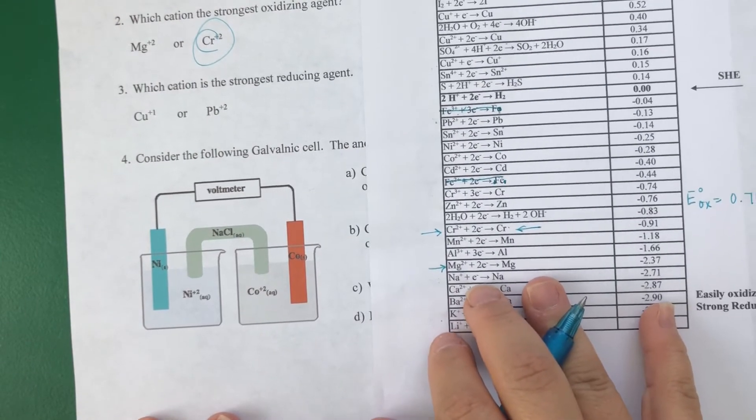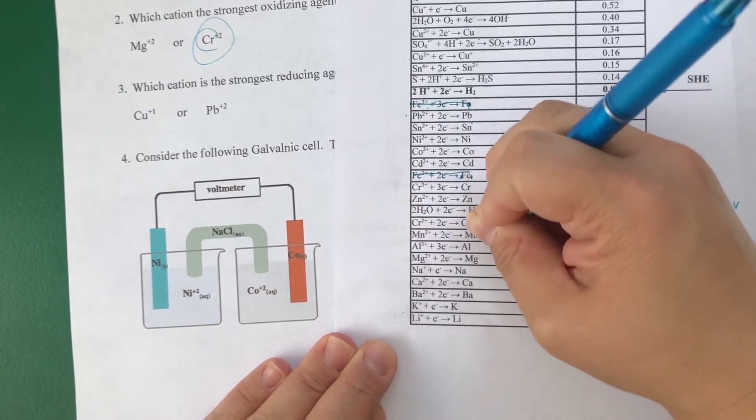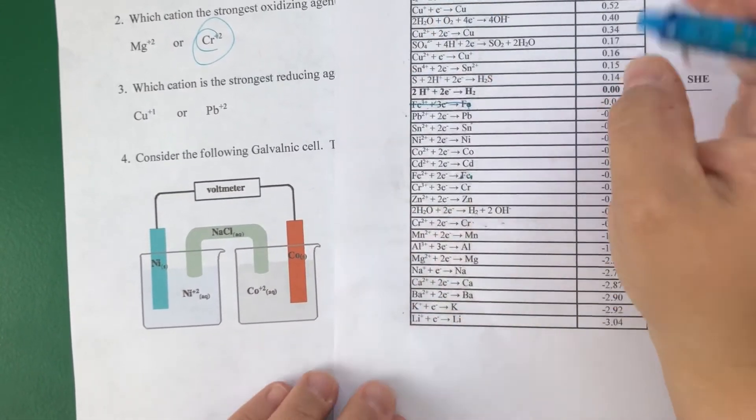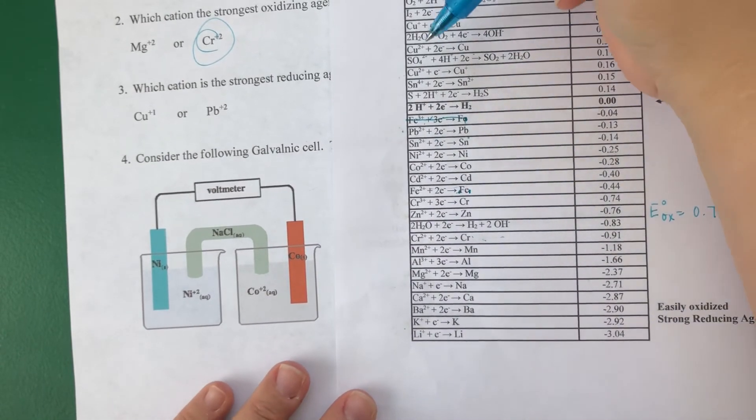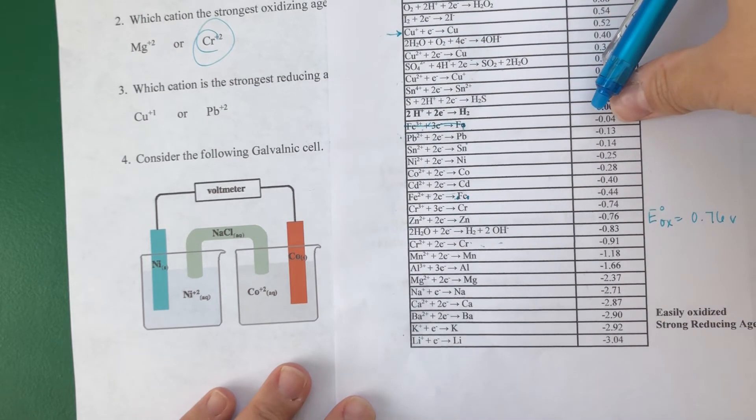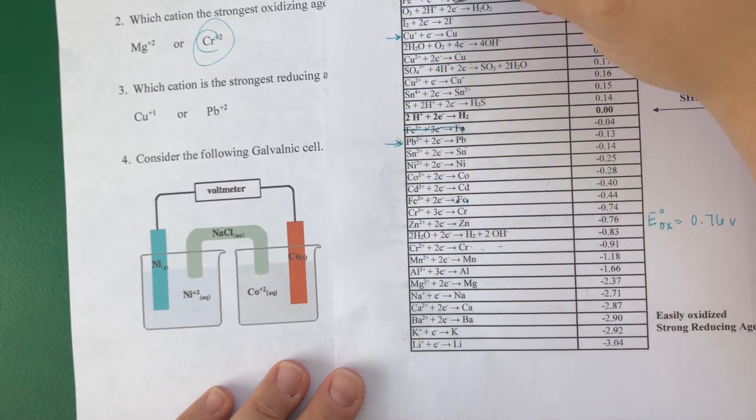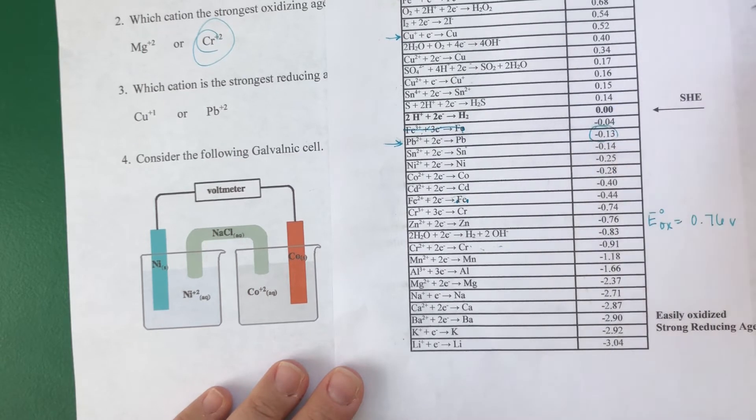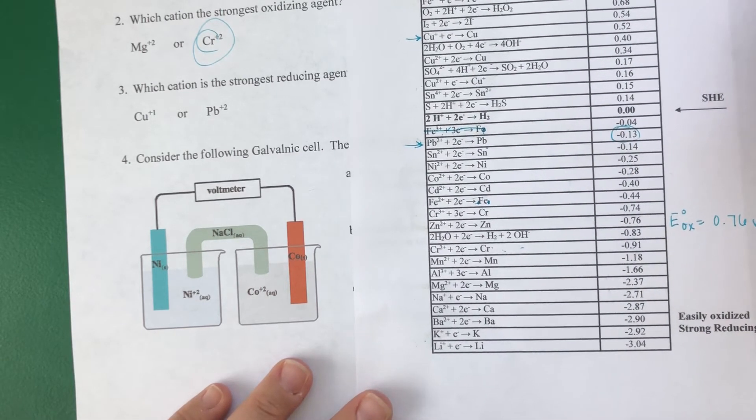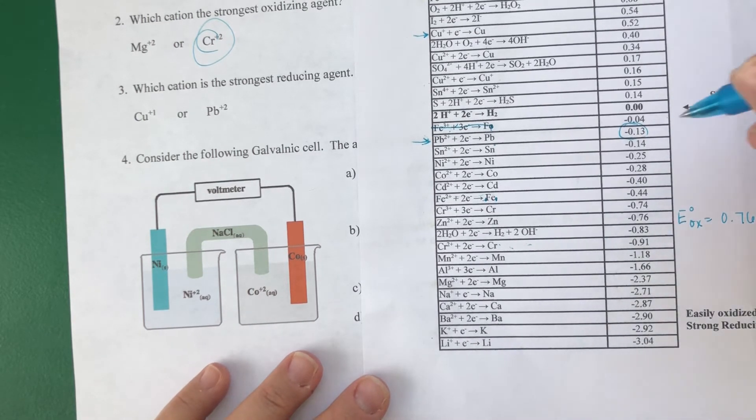Which cation is the strongest reducing agent? Between copper 1+, here's Cu²⁺, this is Cu⁺ and Pb²⁺ ion between these two, whoever's got the smallest reduction potential. That would be the one easily oxidized, so the strongest reducing agent, that would be lead.